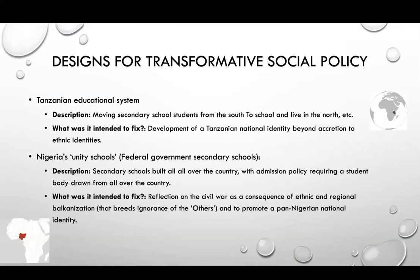In this section of the module, we illustrate the design of transformative social policy with four examples: the design of public education to serve social cohesion, the use of pension funds to finance development projects, the design of a healthcare system meeting transformative social policy criteria, and the deployment of social policy for transformation of gender relations. The provision of educational services is often associated with investment in human resources. We have two cases from Africa illustrating education for social cohesion: Tanzania and Nigeria.